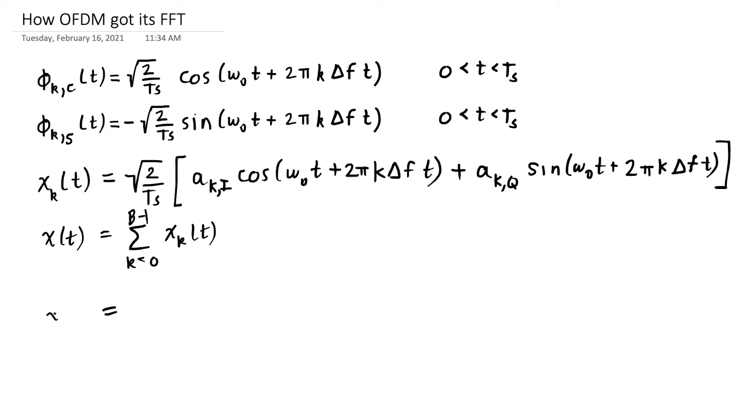And instead of writing that all out exactly as I wrote it in the equation above, I'm going to write this as follows. I'm going to pull out the square root of two over T sub S again, and I'm going to use the complex baseband notation that we've used before to bring in this sum. When I write this in this form with the real part of a complex value, I'm going to multiply this e to the j omega_0 plus 2π k delta Ft.